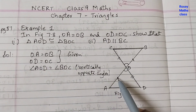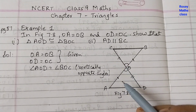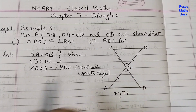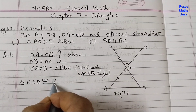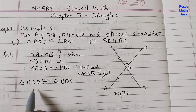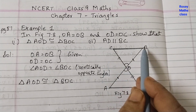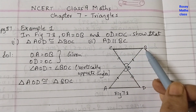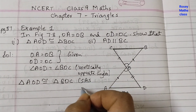So now we have OC equal to OD, and this angle equal to this angle — Side-Angle-Side — so according to the SAS congruence rule these two triangles are congruent. Triangle AOD is congruent to triangle BOC. Be careful to write the same order — don't change the order. If you start from AOD it should be BOC, not COB.